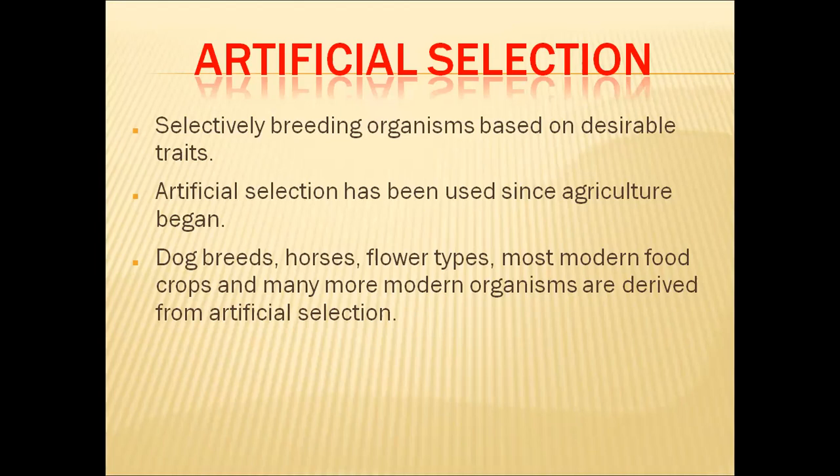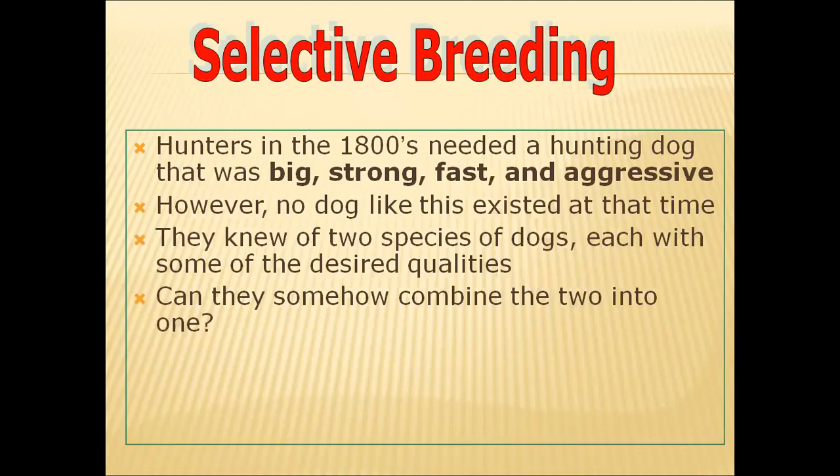Human beings have developed several types of dog breeds, horses, flower types, and most modern food crops through artificial selection methods since ages. The history of selective breeding in animals goes back to prehistoric ages.